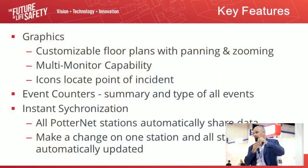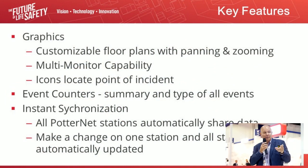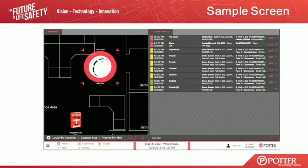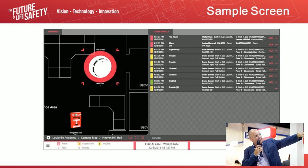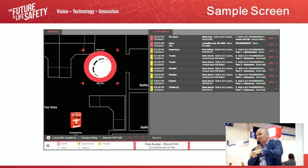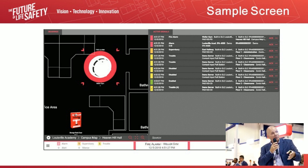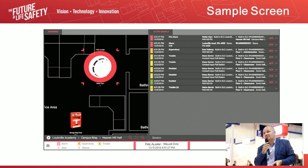In terms of synchronization, all panels share all information across the network. If you make a change on one panel, it automatically updates the whole network — no manual changes needed. The graphic icons expand and change color on fire or fault, giving a complete summary of the event. You can drill down into each event for further information and add details about specific devices or rooms as part of the configuration setup.